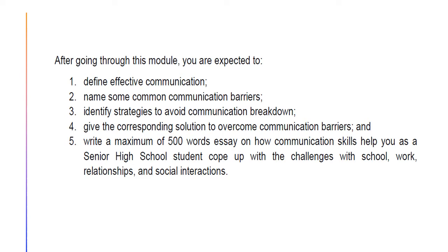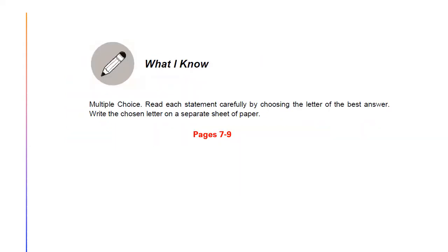With these skills, you are now ready to compete globally and face the world with confidence. After going through this module, you are expected to define effective communication, name some common communication barriers, identify strategies to avoid communication breakdown, give the corresponding solution to overcome communication barriers, and write a maximum of 500 words essay on how communication skills help you, as a senior high school student, cope up with the challenges with school, work relationships, and social interactions. Before we begin the lesson proper, you will see an icon on page 7 that says 'What I Know.' This part includes an activity that aims to check what you already know about the lesson. You may answer those questions in a yellow paper. The quiz is on pages 7 to 9. Good luck!